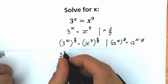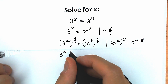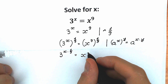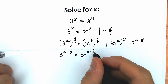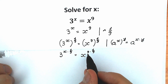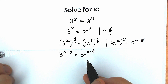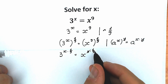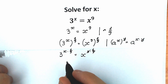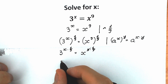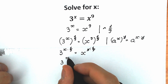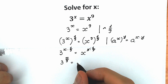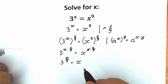As a result, we have 3 to the power x times 1 over 9, equal to x to the power 9 times 1 over 9. If you look closely, 9 times 1 over 9 — this is like an opposite fraction, so this is equal to 1. And x times 1 over 9 equal to x over 9. So finally, we have 3 to the power x over 9 equal to x.